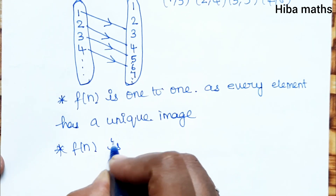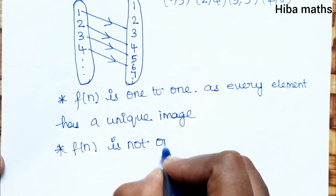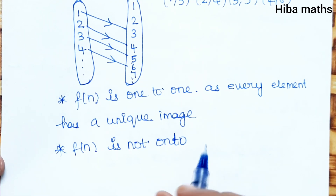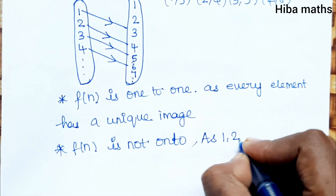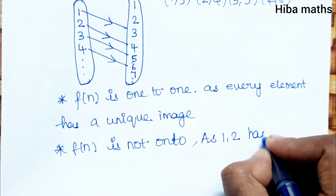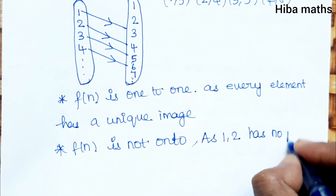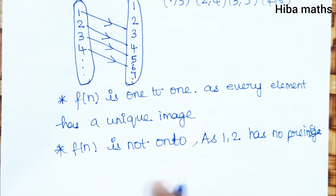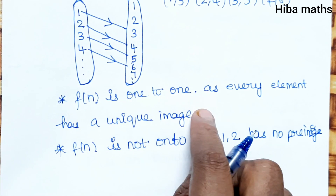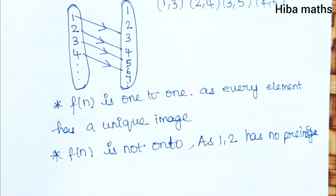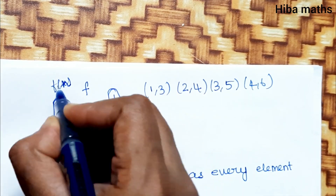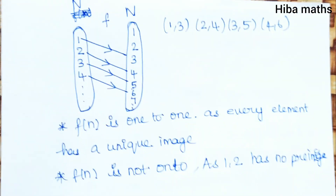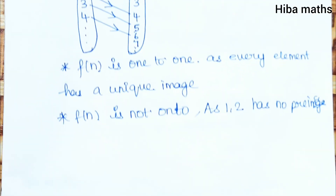However, f(n) is not onto. This is not onto because 1 and 2 have no pre-image in the domain. As 1 and 2 have no pre-image, the function from ℕ to ℕ is one-to-one but not onto. So this function is one-to-one but not onto.